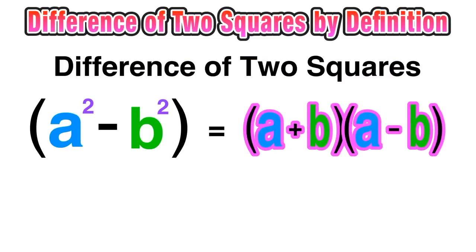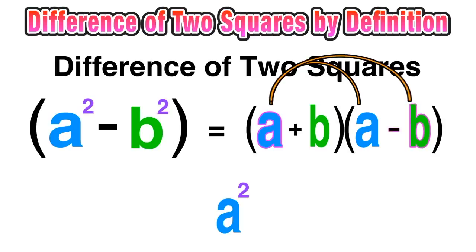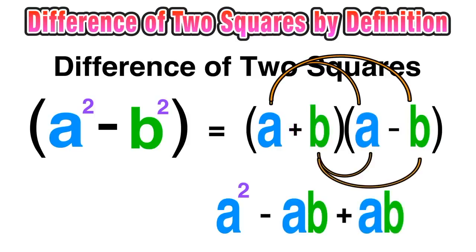Using this general definition, let's see why it actually works out. We can do this through double distribution where we have a times a is equal to a squared, a times negative b is negative ab.